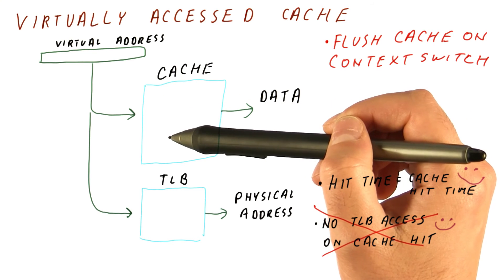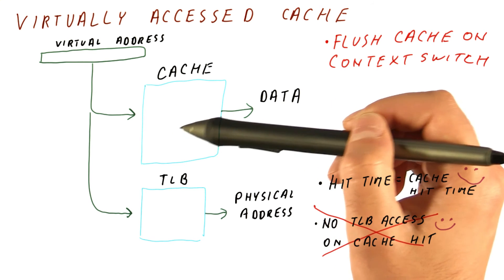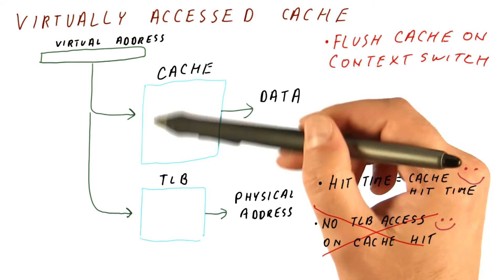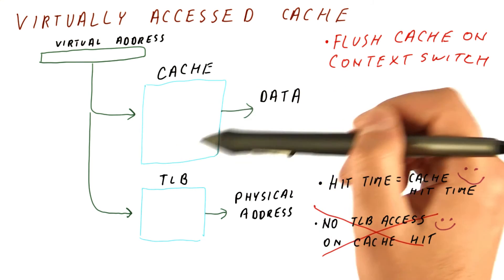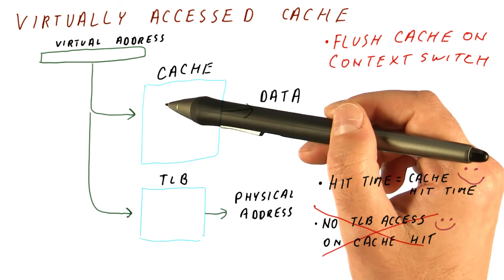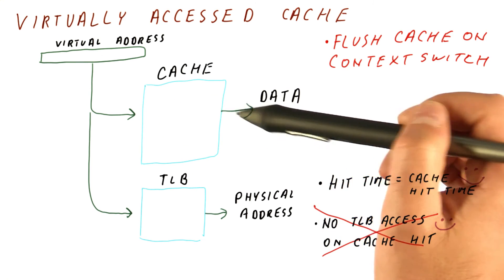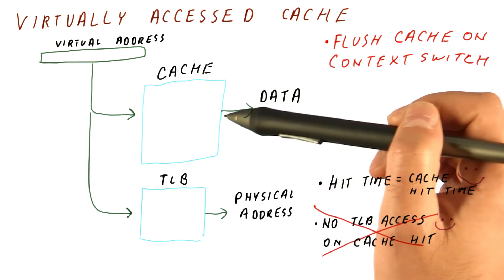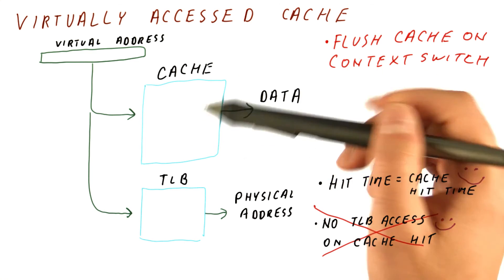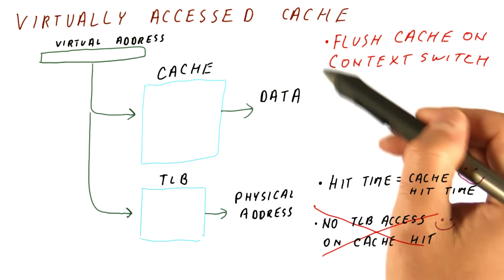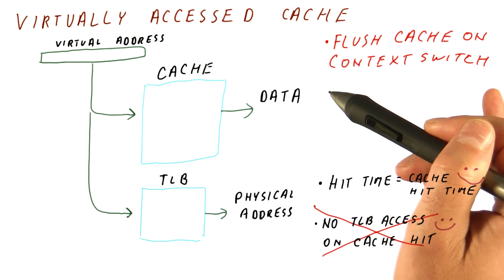Processes are switched once every millisecond or so, so it doesn't sound like a big deal. But keep in mind that the cache can be large, so it takes a lot of misses to bring data back into it. This means we have a burst of cache misses every time we switch processes, which is a significant disadvantage.